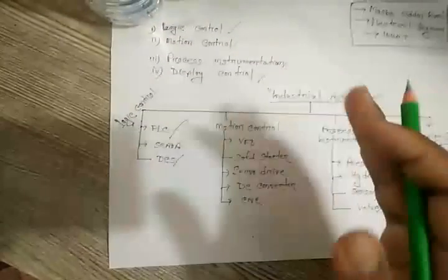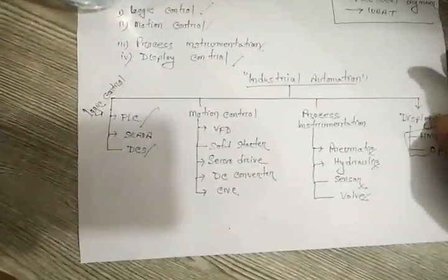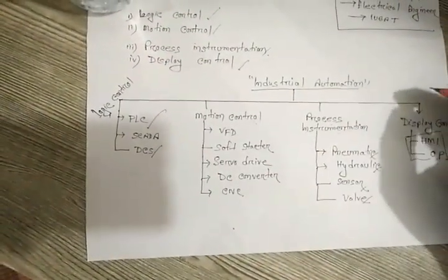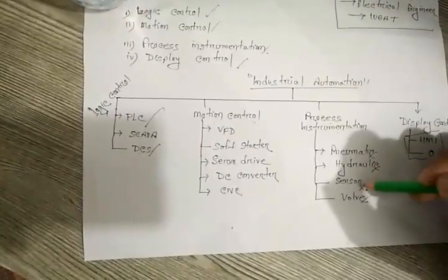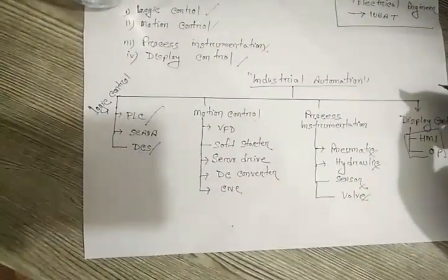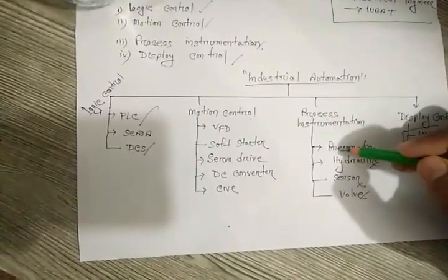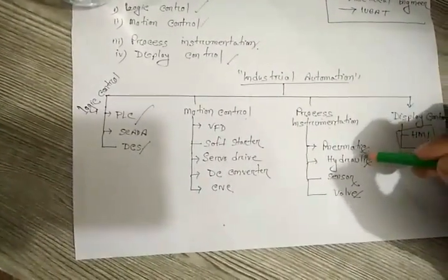And the third step, if we come to the third step, is process instrumentation. Process instrumentation is mainly divided into four parts or it can be divided into more parts. First one is pneumatic, hydraulic, sensor and valve.